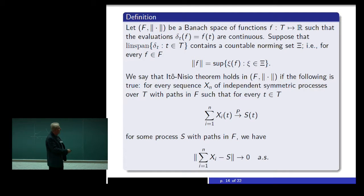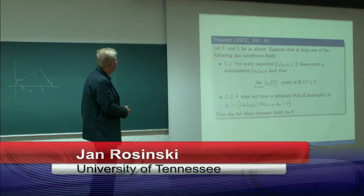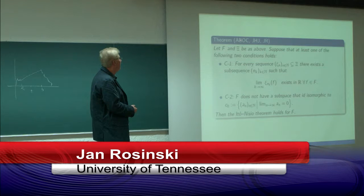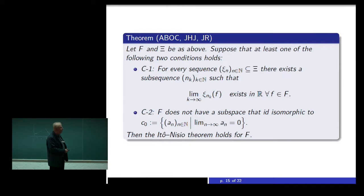Now we say the Itô-Nisio theorem holds in that space if the following is true: if for every sequence X_n of independent symmetric processes over T with path in F, such that for every evaluation T we have the convergence to some random element S with path in F, that implies that the series converges in the norm of space F. So it's a natural definition. The theorem, so here is Andreas, here is Basse, there is O'Connor apostrophe, so Abog, and here is Jørgen Hoffman-Jørgensen, and that's me.